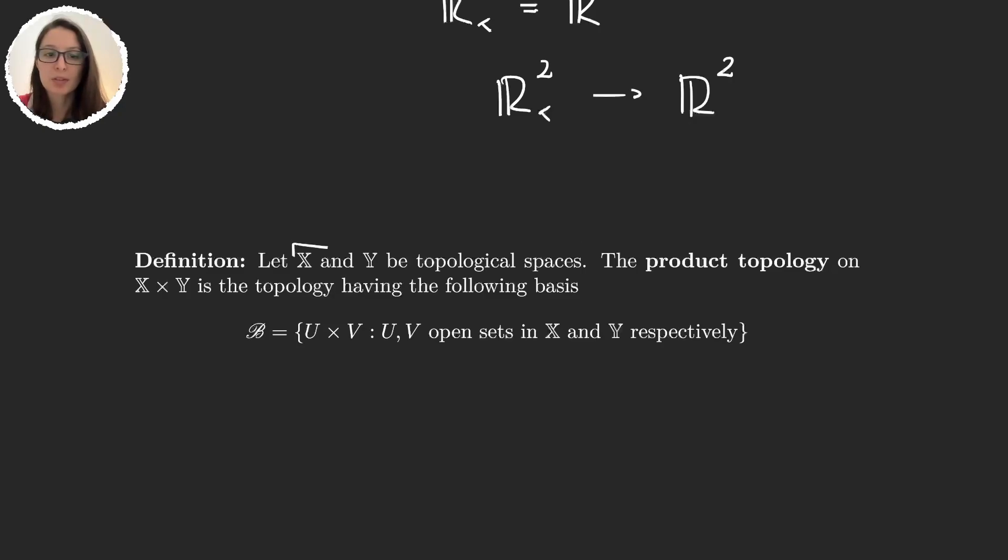We have x and y, two topological spaces. Remember that what this meant is we have the set x with its own topology tau x, and the set y with its own topology tau y. And we want to define the product topology on the space x times y.